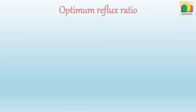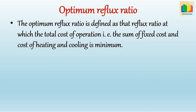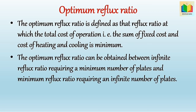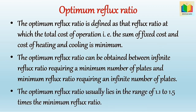The optimum reflux ratio is defined as that reflux ratio at which the total cost of operation — that is, the sum of fixed cost and cost of cooling and heating — is minimum. The optimum reflux ratio is obtained between the infinite reflux ratio requiring a minimum number of plates and the minimum reflux ratio requiring an infinite number of plates. The optimum reflux ratio usually lies in the range of 1.1 to 1.5 times the minimum reflux ratio.